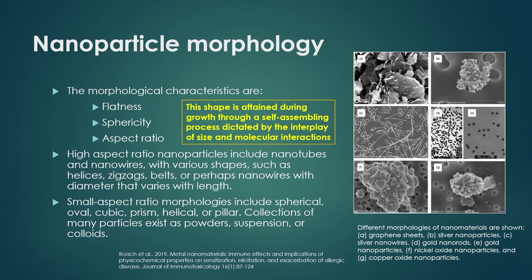Equipment is available to measure aspect ratio, sphericity, flatness, surface area, and other surface characteristics. The picture shows different morphologies of nanomaterials: graphene sheets (A), silver nanoparticles (B), silver nanowires (C), gold nanorods (D), gold nanoparticles, nickel oxide nanoparticles, and copper oxide nanoparticles. This image is taken from a paper on metal nanomaterials and immune effects published in the Journal of Immunotoxicology.